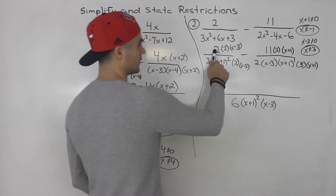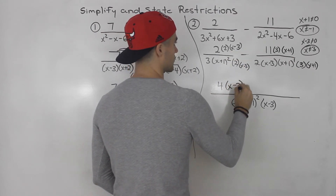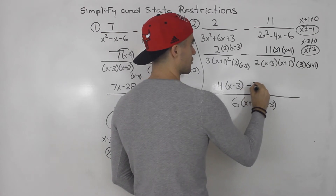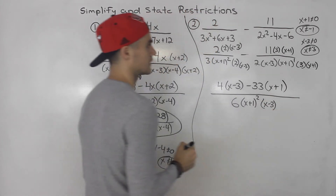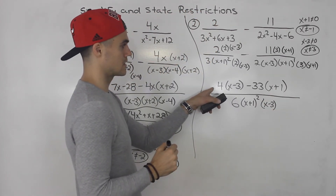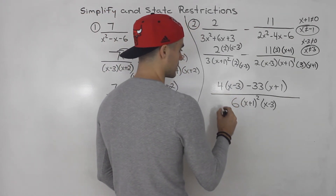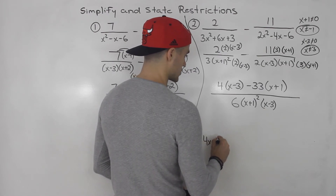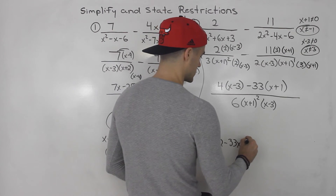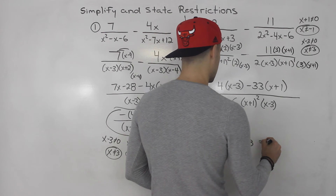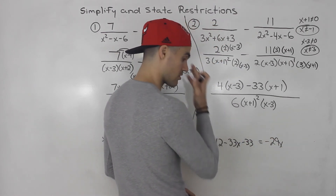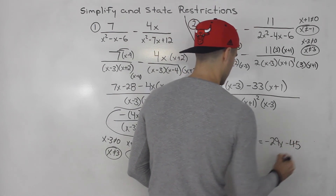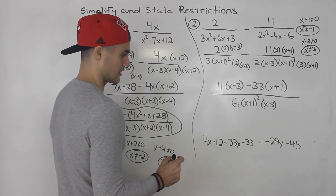Two times two gives us four, so the first numerator becomes four times bracket x minus three. For the second, negative one times eleven times three gives minus thirty-three, so it becomes minus thirty-three times bracket x plus one. Expanding: four x minus twelve minus thirty-three x minus thirty-three. Four x minus thirty-three x gives negative twenty-nine x, and negative twelve minus thirty-three gives negative forty-five.